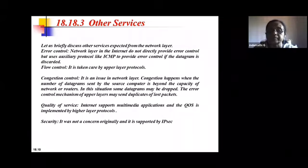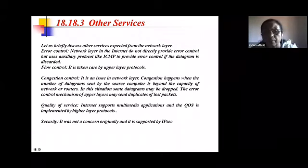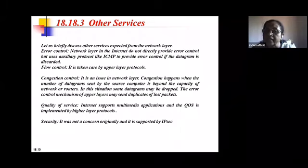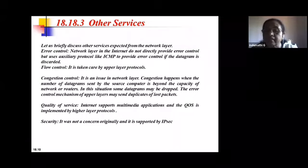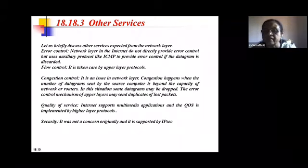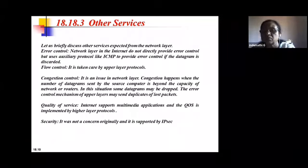Other services expected from the network layer include error control, but the IP protocol offers only best-effort services, so full error control is not provided by the network layer itself. To a certain extent, error control is handled by the auxiliary protocol ICMP (Internet Control Message Protocol).